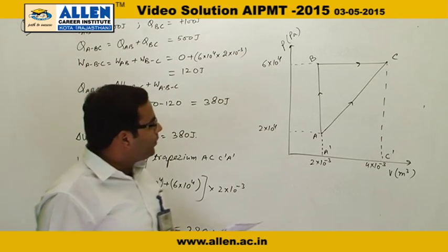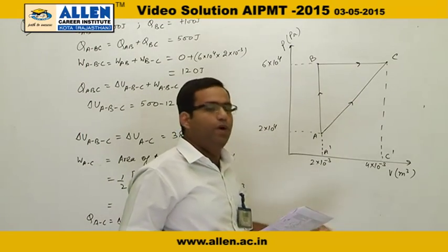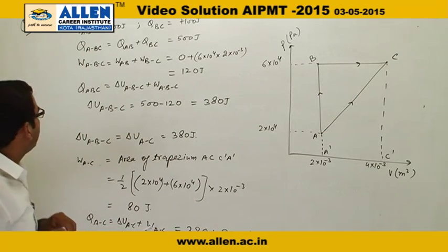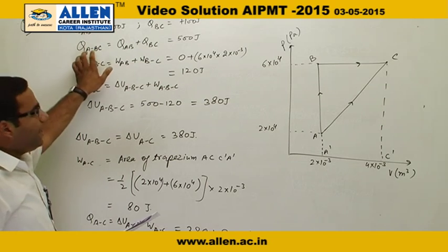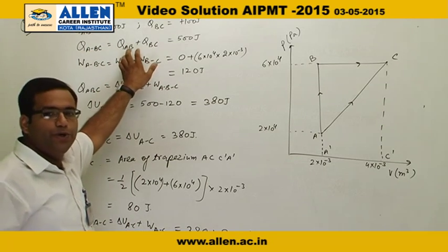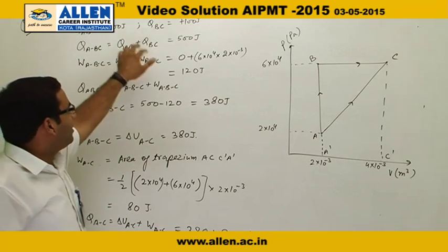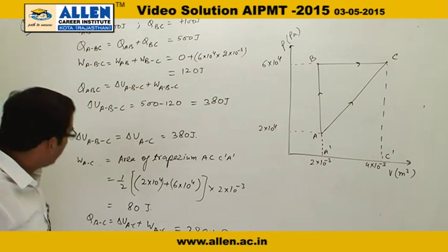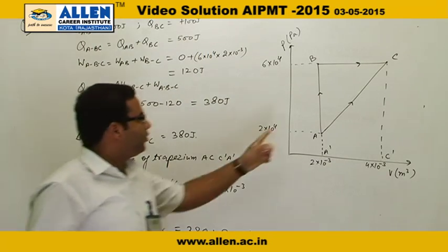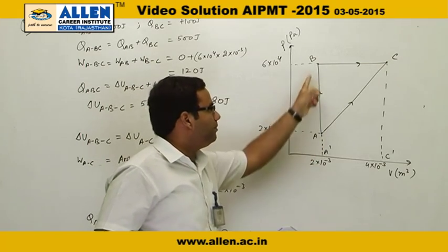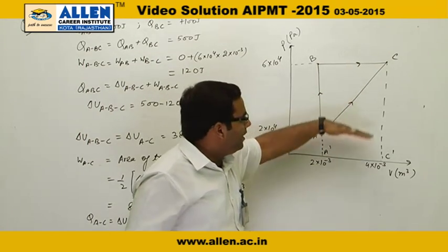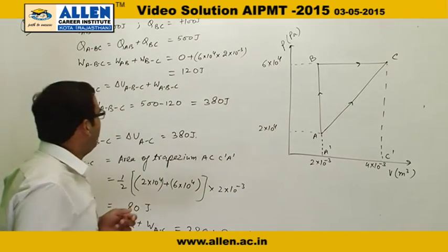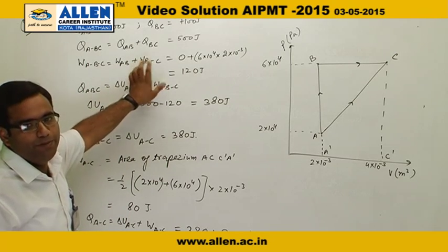So delta U ABC will be equal to delta U AC. We start by noting that QABC equals QAB plus QBC, which gives us 500 joules. To calculate the work done for the complete path ABC, this will be the area under the curve, which forms a rectangle, equal to WAB plus WBC.